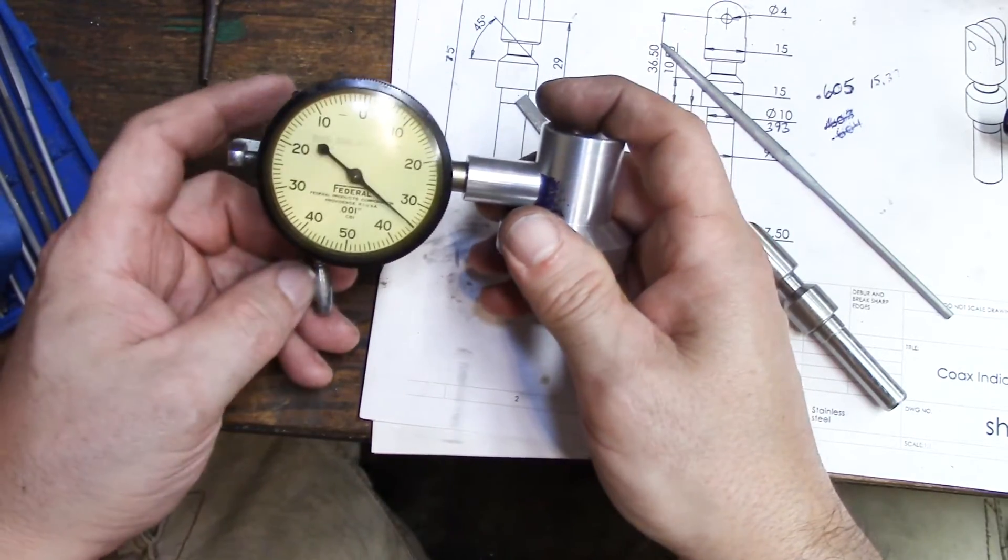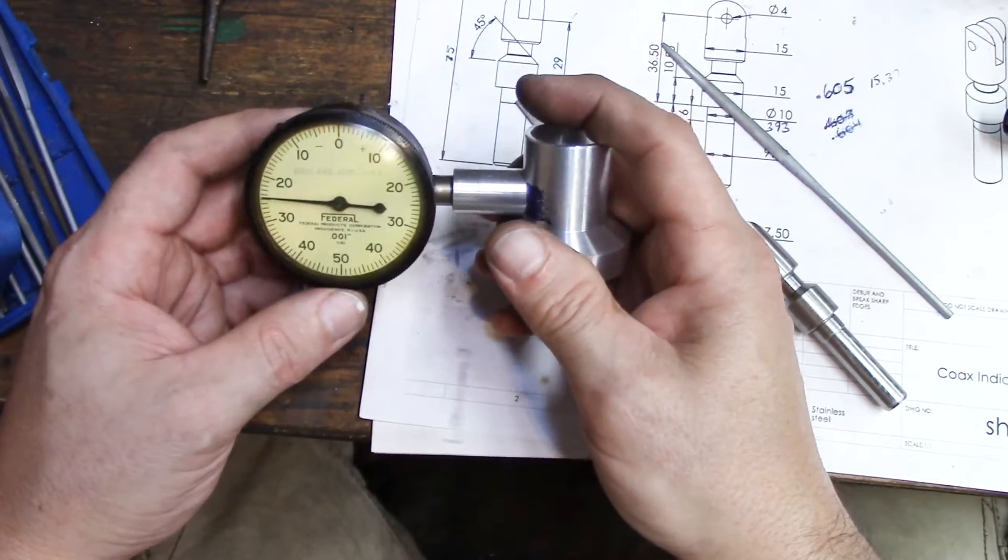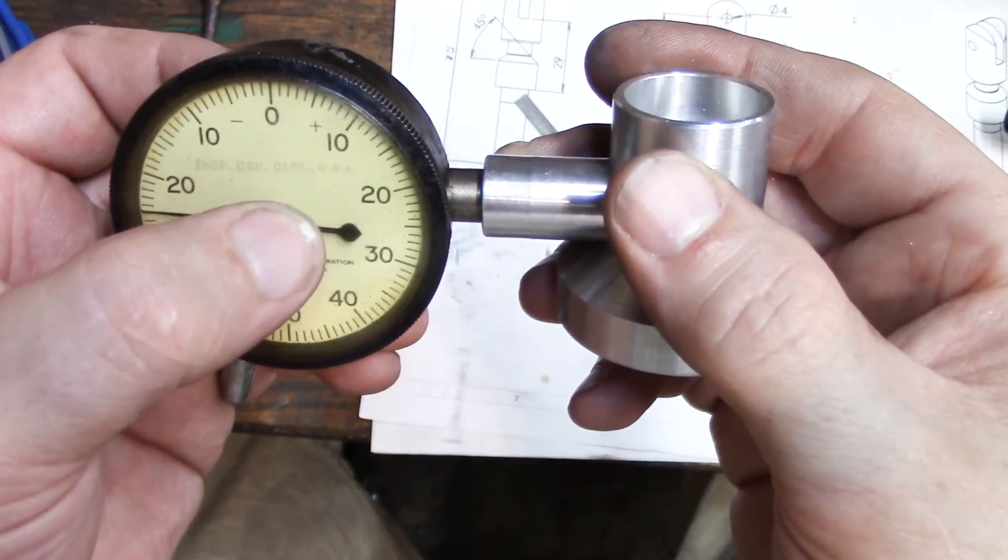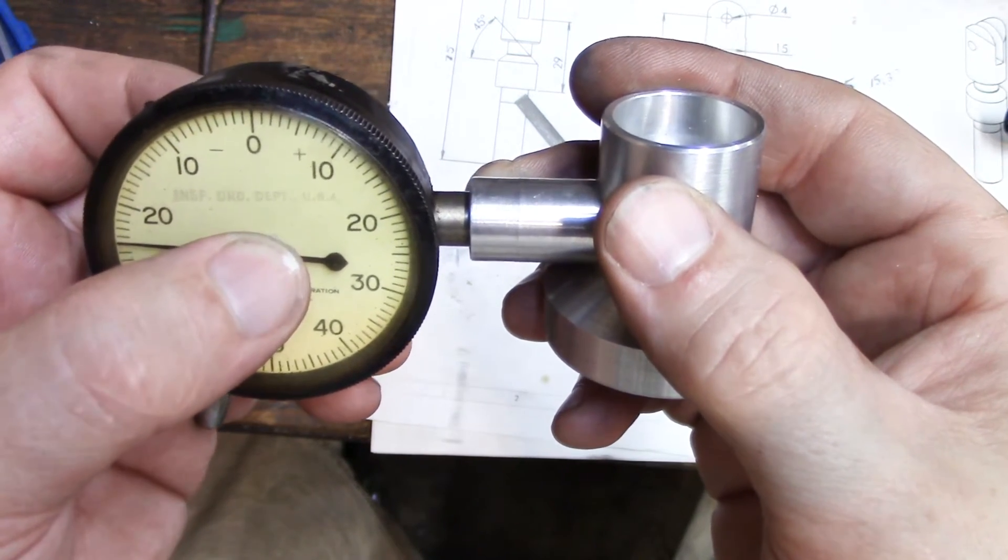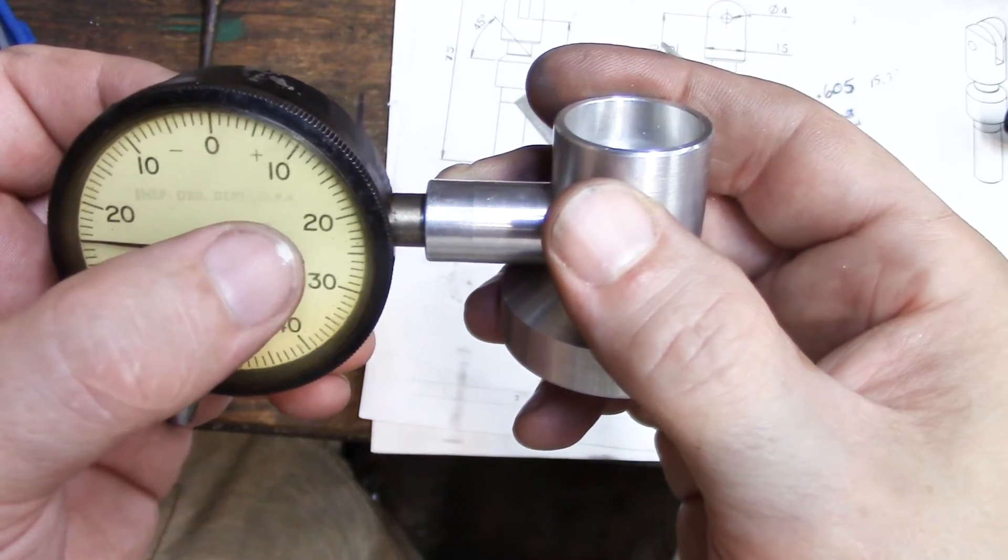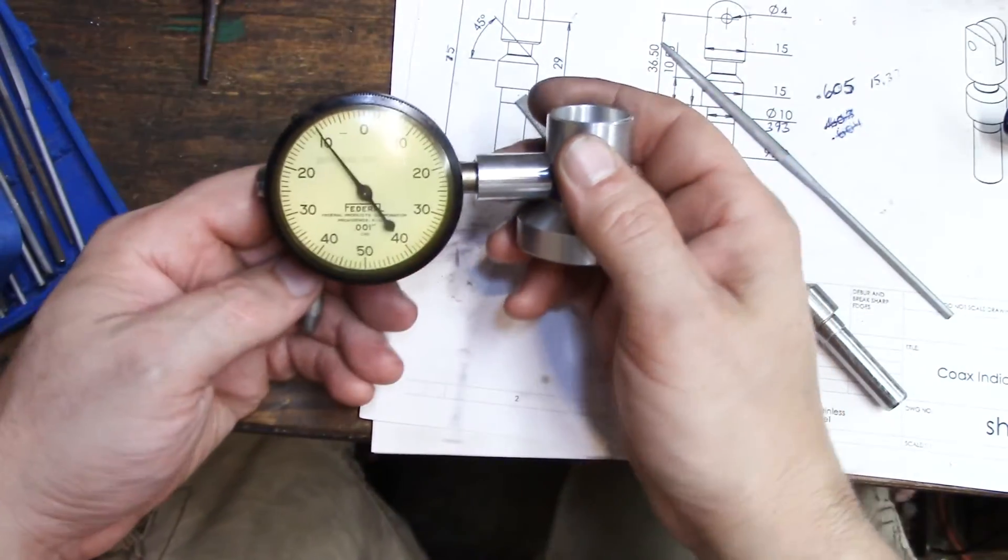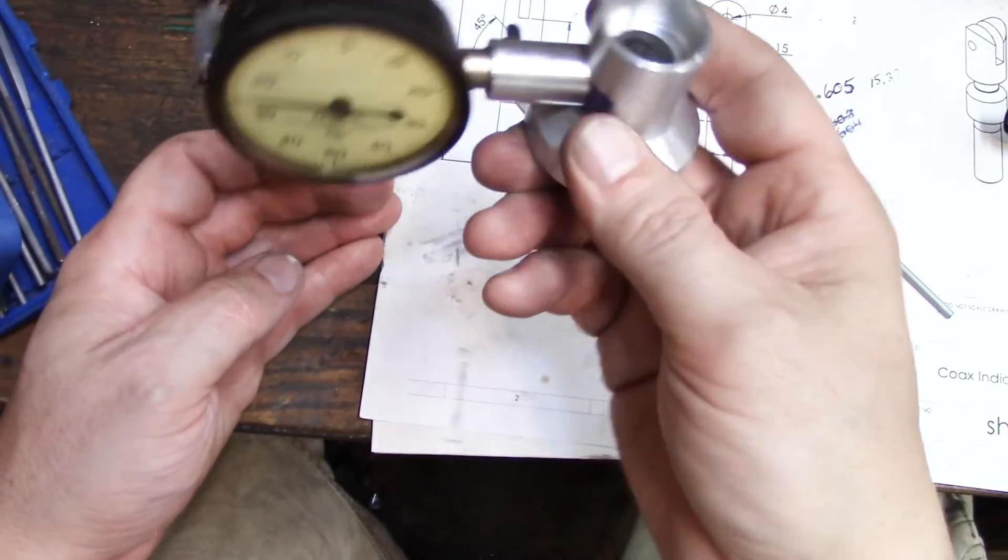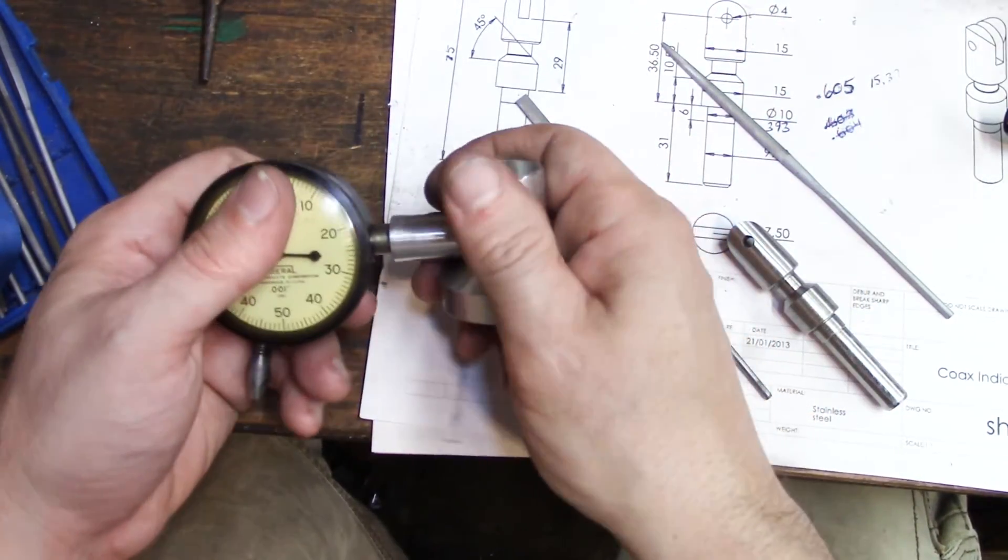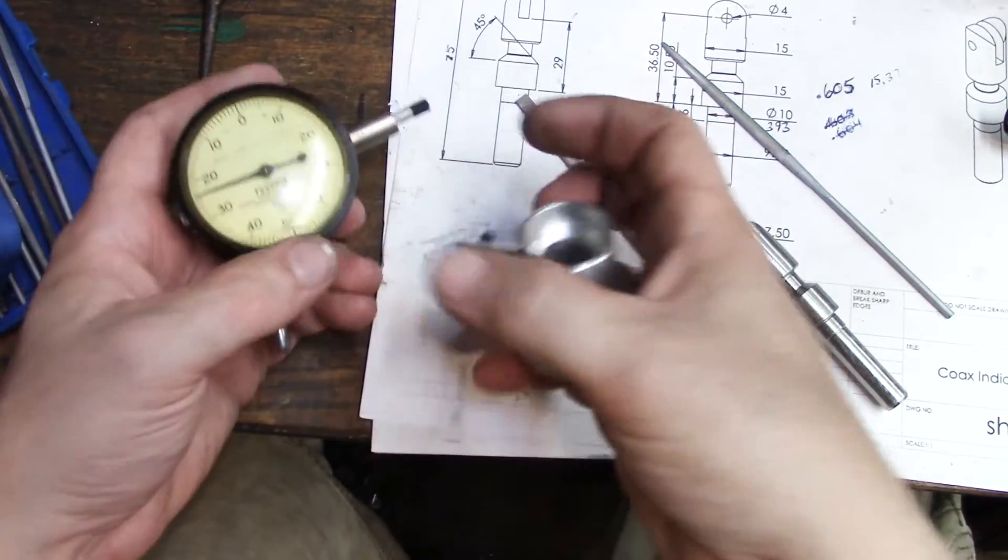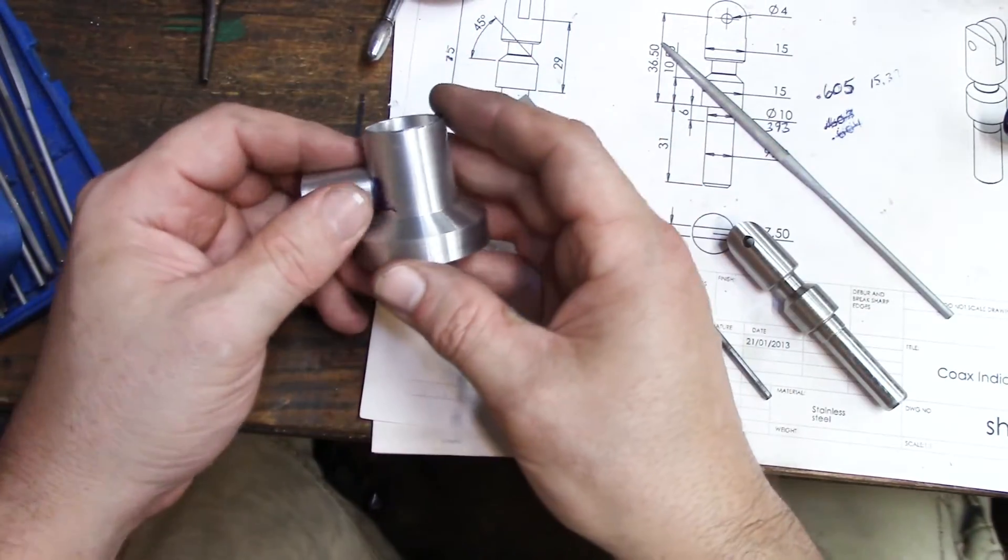I'd like to because I really like it. It's an old Federal that actually has Inspection, Ordnance, Department, USA. So it's pretty old. It's really nice, but it's a little heavy. We'll probably find a smaller face one to go on there.